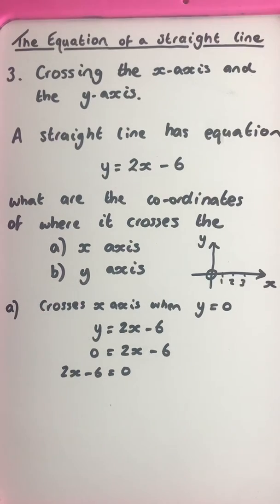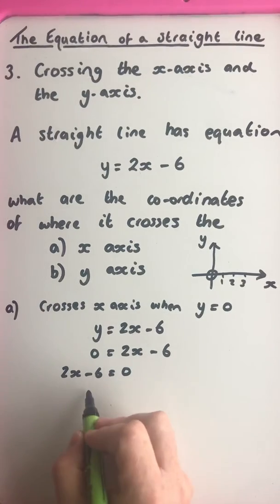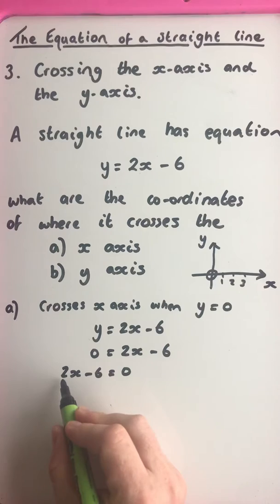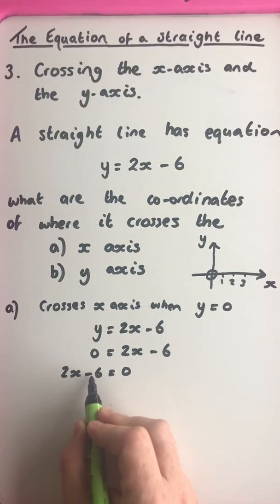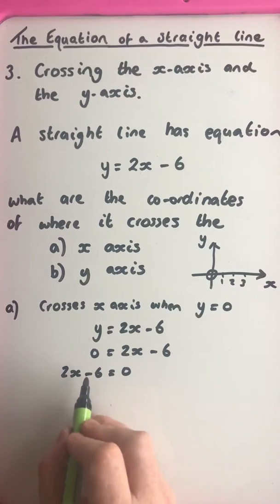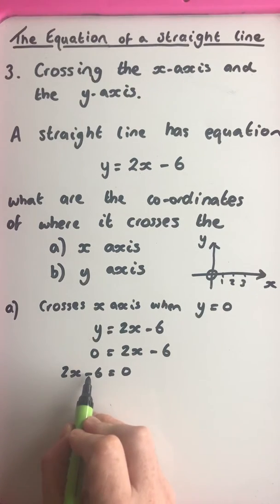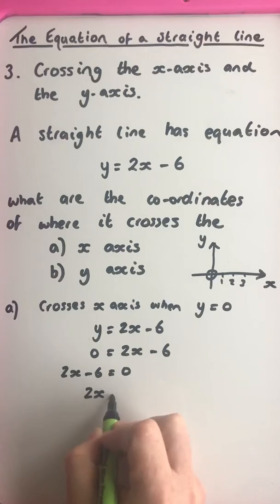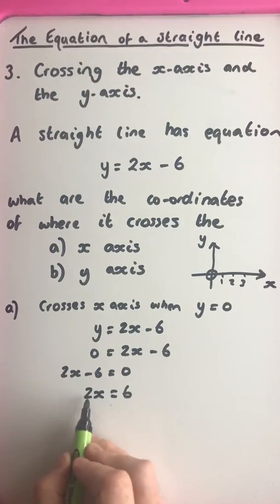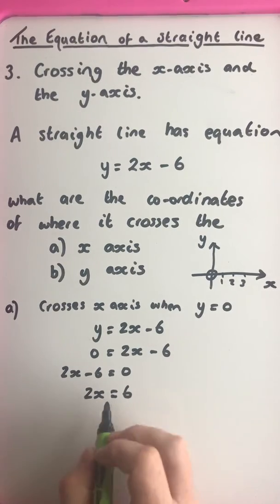Now we've got a linear equation. We've got an equation 2x minus 6 equals 0, so we can solve this for x. We can change the side, change the operation, invert that negative to a positive. So 2x is equal to 6.